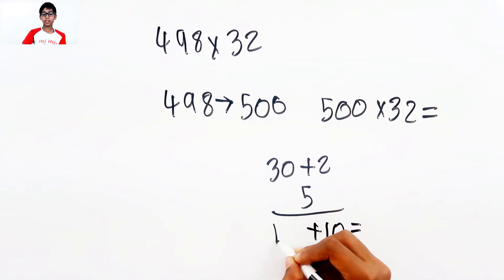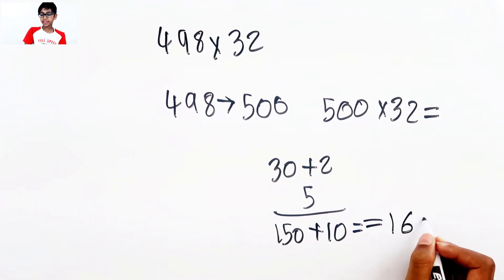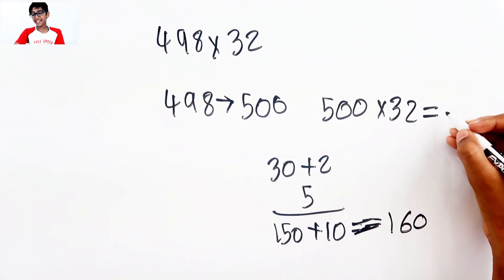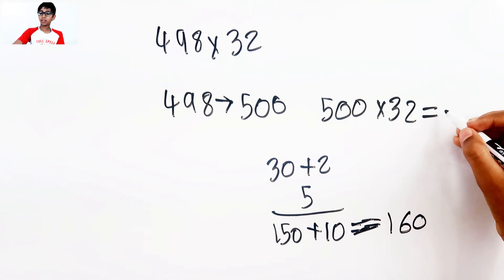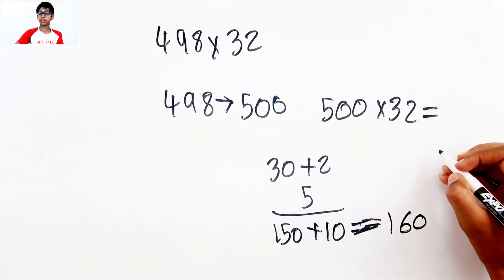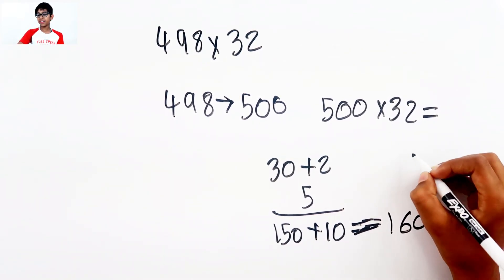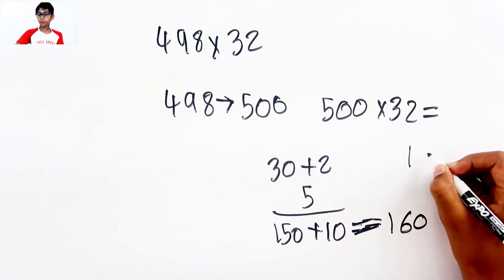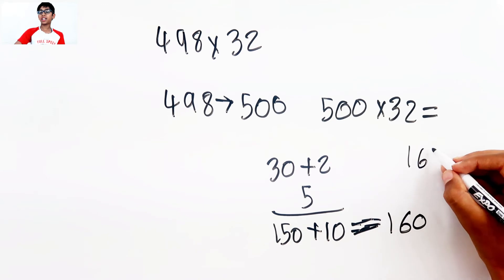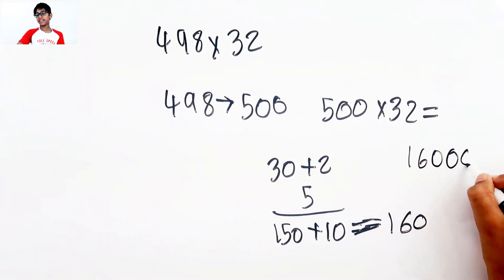Plus 2 times 5 equals 10. 3 times 5 equals 15. So we need to put the 0, 150, which equals 160. So 160, we need to add two zeros. So 16,000.